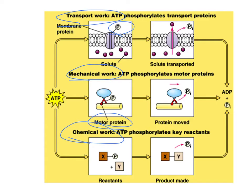ATP is formed during cellular respiration — that's the point of cellular respiration. Cells need transportation, mechanical work, and chemical work to happen, and most of that is powered by ATP. ATP is produced by cellular respiration, and we're going to focus first on aerobic respiration, when oxygen is present.